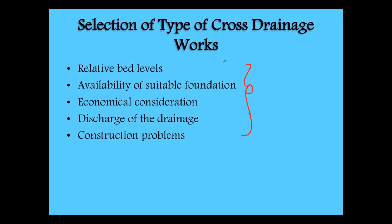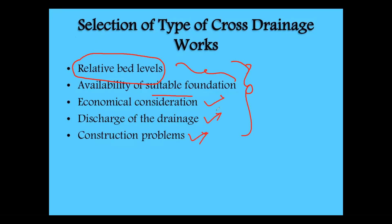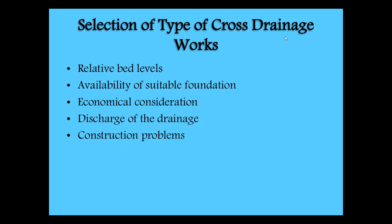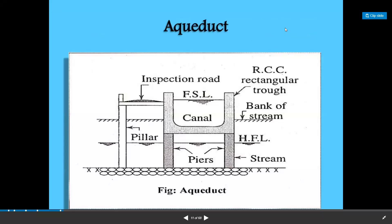The major important factors are relative bed levels and availability of foundation — these are the technical details. After that, economical considerations and discharge are also technical, and construction problems represent social considerations. These are the key factors helpful for the selection of the type of cross-drainage work.